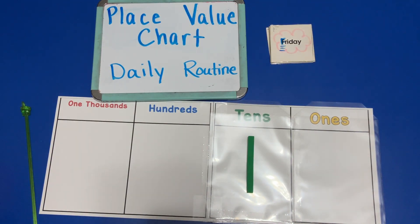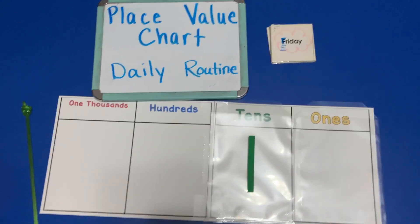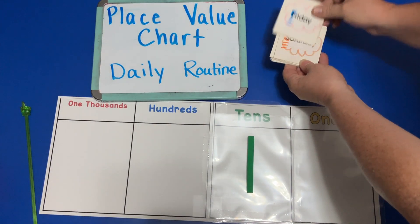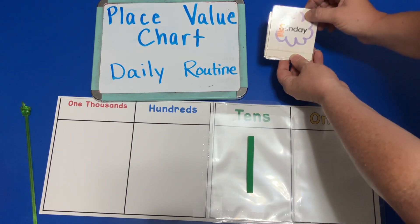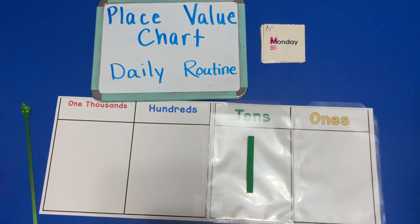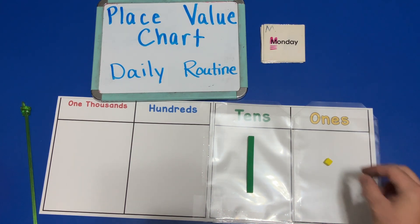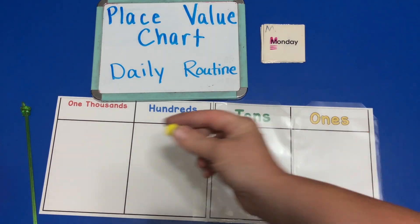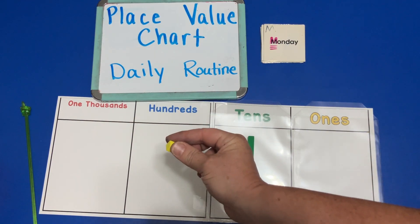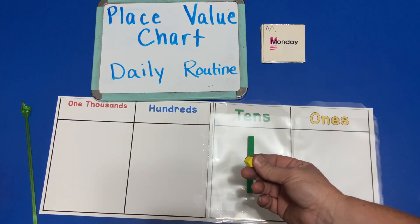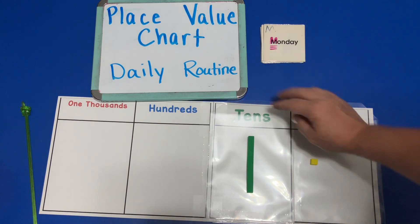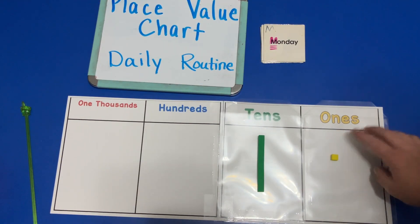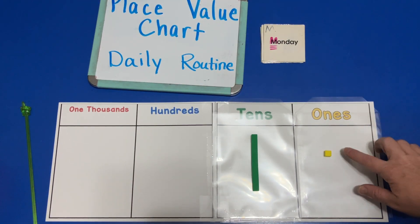We don't usually do school on Saturday — some people do — and we don't usually do school on Sunday. But on Monday we're going to add another unit. Do we put this unit in the thousands place? Hundreds place? Tens place? Ones place? Yes — we put this individual unit in the ones place.